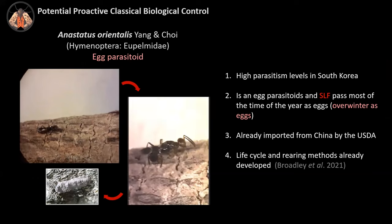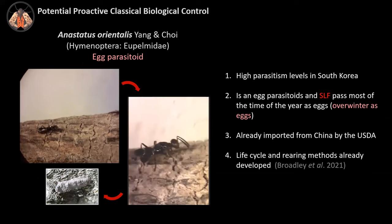We centered our efforts on the parasitoid Anastatus orientalis. The main reasons to select this parasitoid were: it shows good parasitism levels in South Korea, where spotted lanternfly is also invasive; it has been used in biocontrol programs as an egg parasitoid; and spotted lanternfly spends most of the year as eggs, overwintering as eggs, so the parasitoid will have a bigger window of opportunity to parasitize spotted lanternfly eggs.